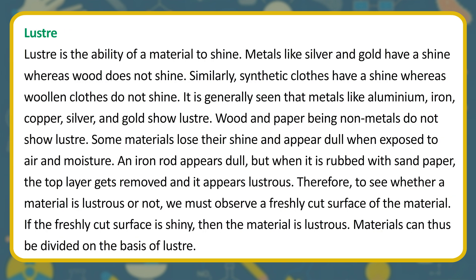Luster is the ability of a material to shine. Metals like silver and gold have a shine, whereas wood does not shine. Similarly, synthetic clothes have a shine whereas wool and cotton do not. It is generally seen that metals like aluminum, iron, copper, silver, and gold show luster, while wood and paper, being non-metals, do not. Some materials lose their shine when exposed to air and moisture, but rubbing with sandpaper reveals a lustrous surface. Materials can be divided on the basis of luster.